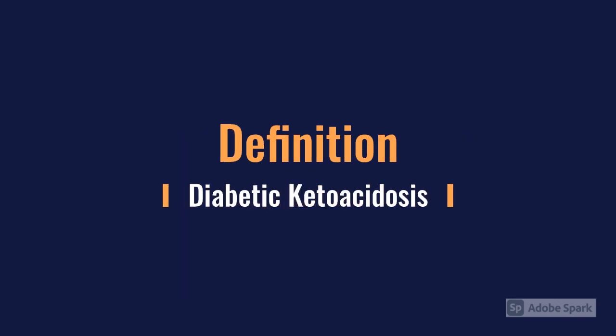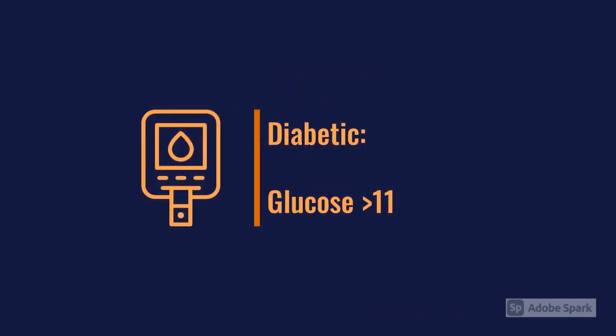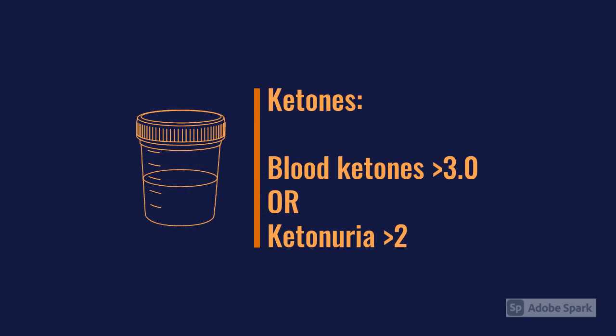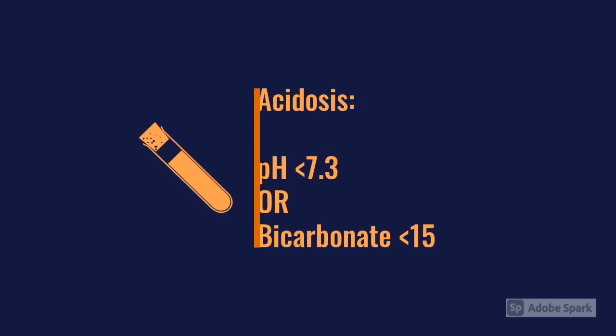Thinking about a definition, there are three things going on that are helpfully highlighted, unusually in medicine, by the title itself. There's something that's diabetic, something involving ketones, and something involving an acidosis. The diabetic element means your blood glucose (BM) is above 11. The ketone element means blood ketones are above 3, or a ketonuria of above 2. And finally, the acidosis is defined as a pH of less than 7.3, or a reduced bicarb of less than 15.